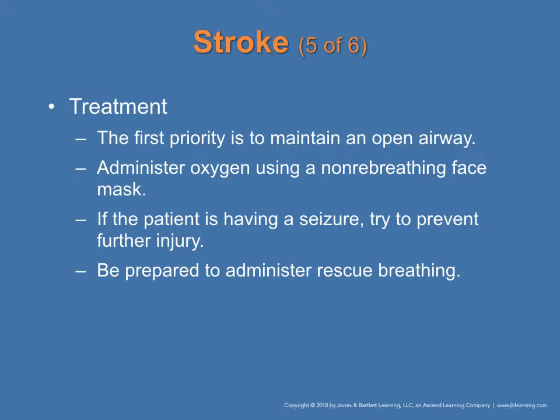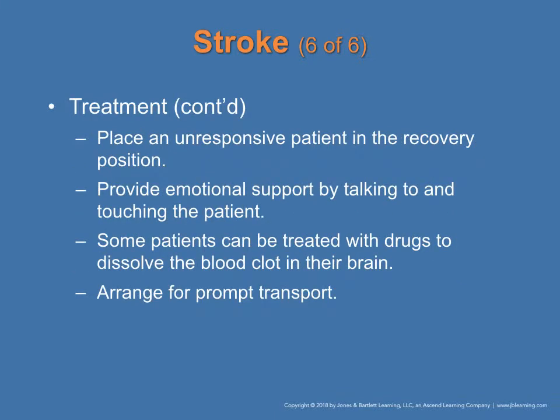Treatment for stroke: first priority is to maintain the patient's airway and administer oxygen. If the patient is having a seizure, prevent further injuries and lay them on their side so that vomit or foam does not go into the airway. Be prepared to administer rescue breathing. If they stop seizing but are in the post-ictal phase — still have a pulse, still breathing, but not responding — place them in a recovery position and provide emotional support. Some patients can be treated with drugs to dissolve the blood clot. Arrange prompt transportation.